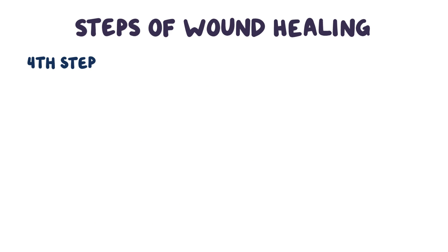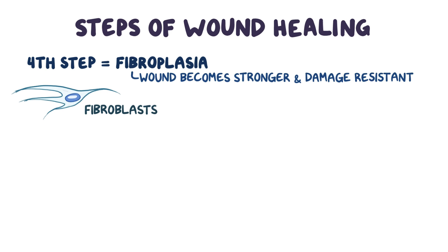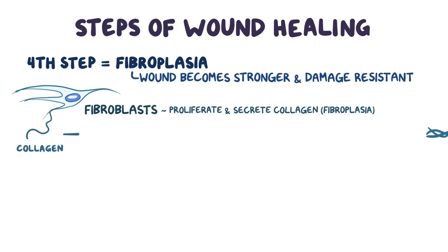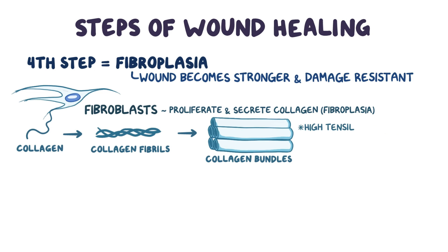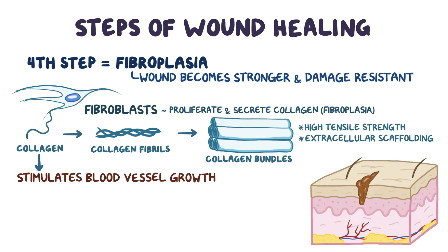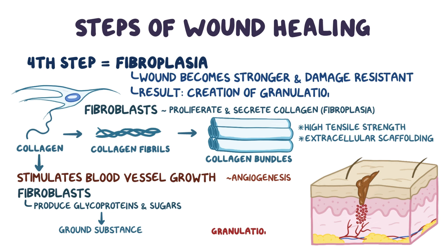The fourth step of wound healing is called fibroplasia, where the wound becomes stronger and resistant to further damage. Fibroblasts in the dermis proliferate and secrete a long fibrous protein called collagen. Collagen proteins assemble to form fibrils, and collagen fibrils assemble to form collagen bundles, which have high tensile strength, acting as extracellular scaffolding that holds together the newly formed epidermal cells. Collagen also stimulates new blood vessels to grow in the area, a process called angiogenesis. Fibroblasts also produce glycoproteins and sugars that make up the ground substance between the cells, resulting in the creation of granulation tissue, the red tissue that lies below the scab in the newly regenerating dermal layer.